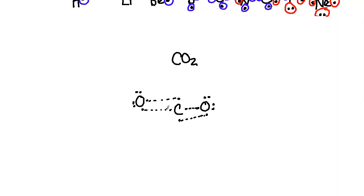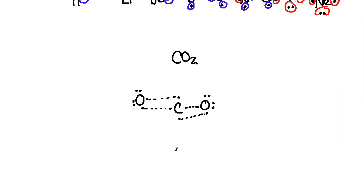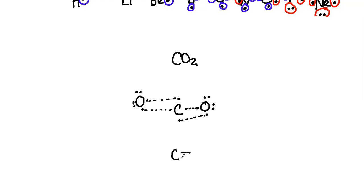With CO₂, the second oxygen is identical. Linking up the unpaired dots gives oxygen double bonded to carbon on the left, and that carbon double bonded to another oxygen on the right: O=C=O. Each oxygen still retains its non-bonding pairs in the final structure.